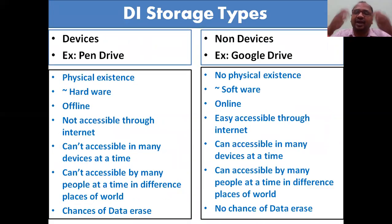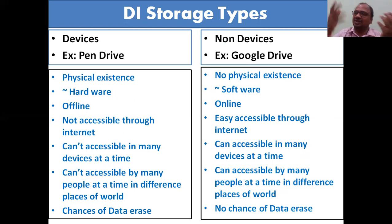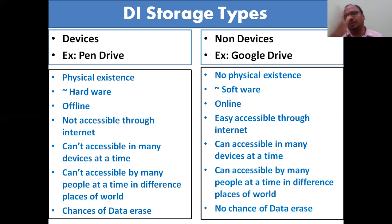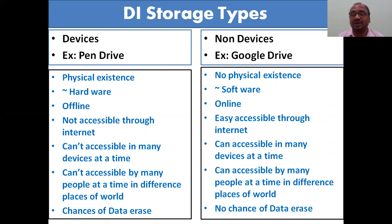Drug information - where do you store it? In the old days they were storing in textbooks or volumes, but nowadays nobody uses that because a lot of information is there and when someone asks you have to search everything - it is not possible with physical books. Everything is software now. Even students are not studying from textbooks, only YouTube videos. Drug information storage types - where you have to store the drug information - mainly two things: devices like a pen drive, CD, DVD, and non-devices.